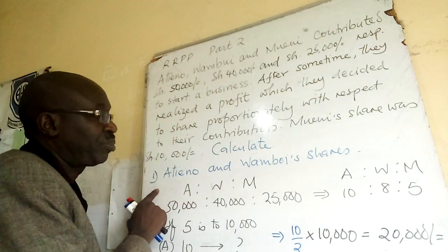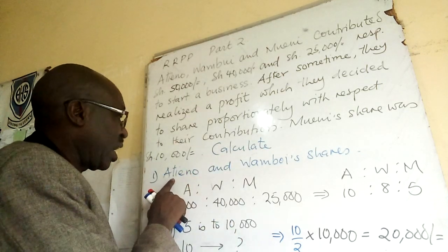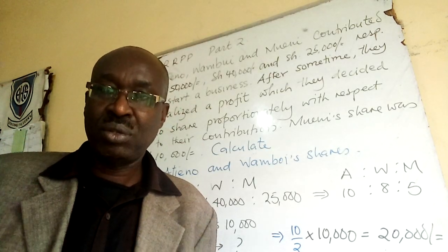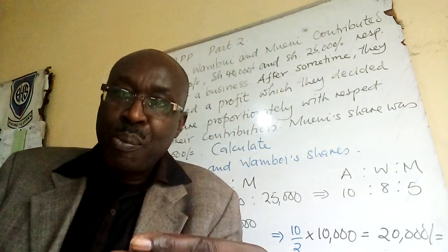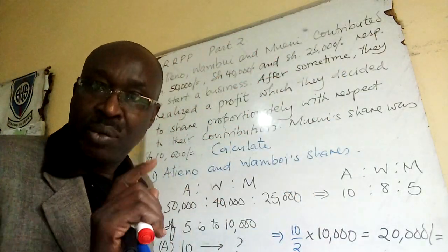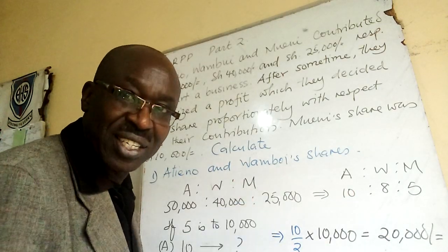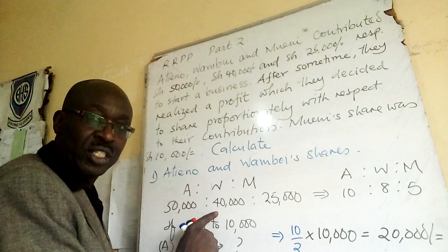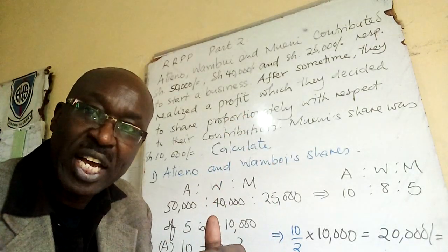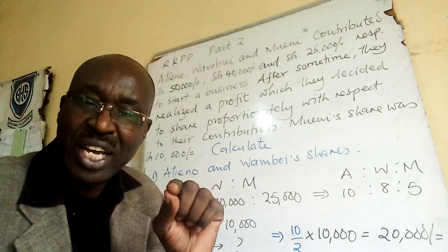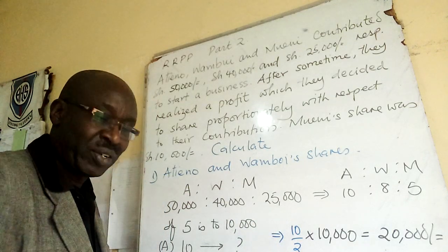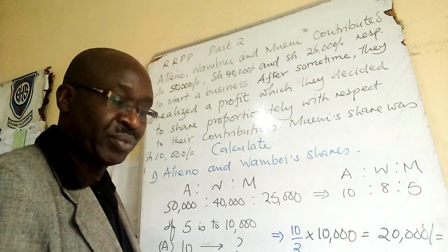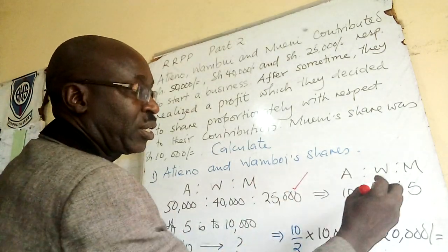Question number one: calculate Atieno and Wamboi's share. Now we put their contributions — 50,000, 40,000, 25,000 — and we want to get their ratios in the smallest numbers. If you check, it reduces to 10 to 8 to 5.